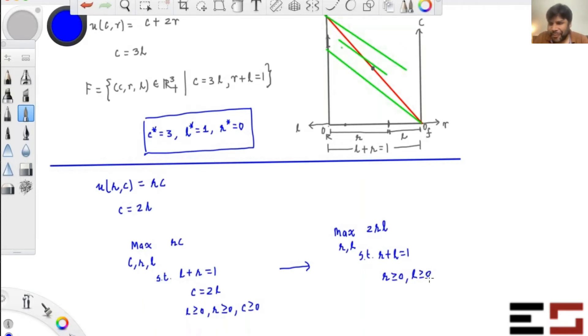This is a standard Cobb-Douglas utility maximization problem subject to a linear constraint, and you know the solution. So R is half, L is half. So R star is half, L star is half, and then using the fact that C is 2L, C star is one. So without plotting, you can just quickly do this because you have solved so many problems involving Cobb-Douglas. You can just use that to answer it directly.